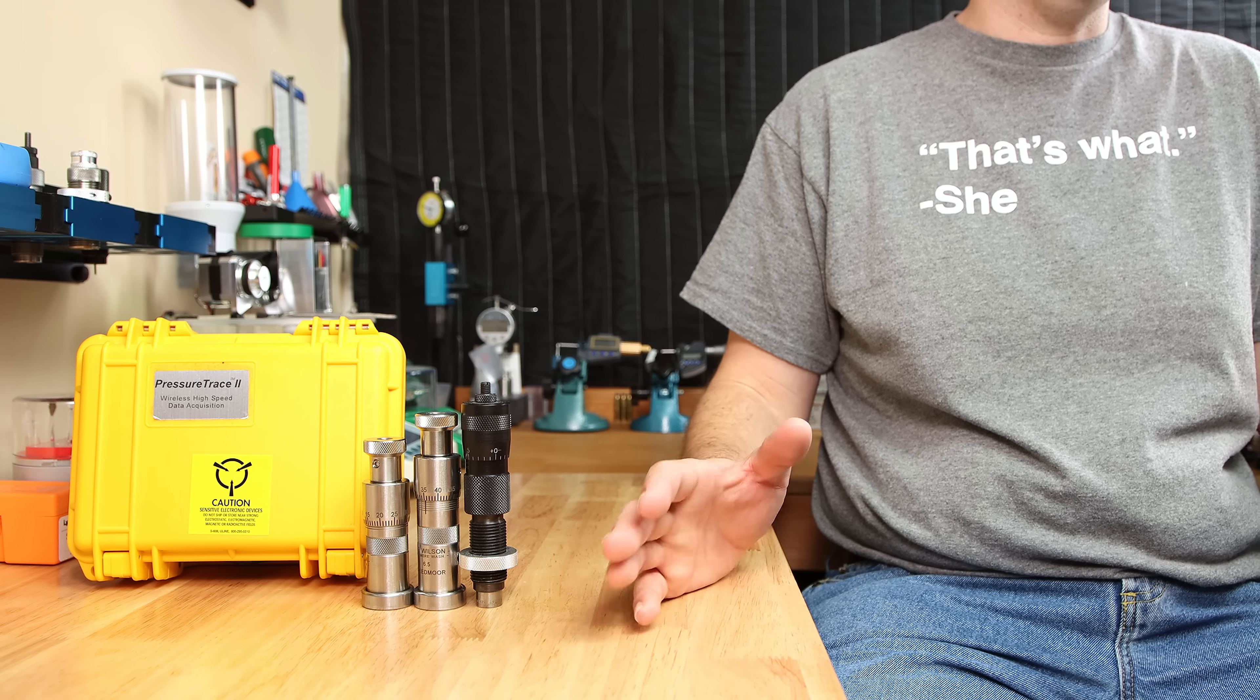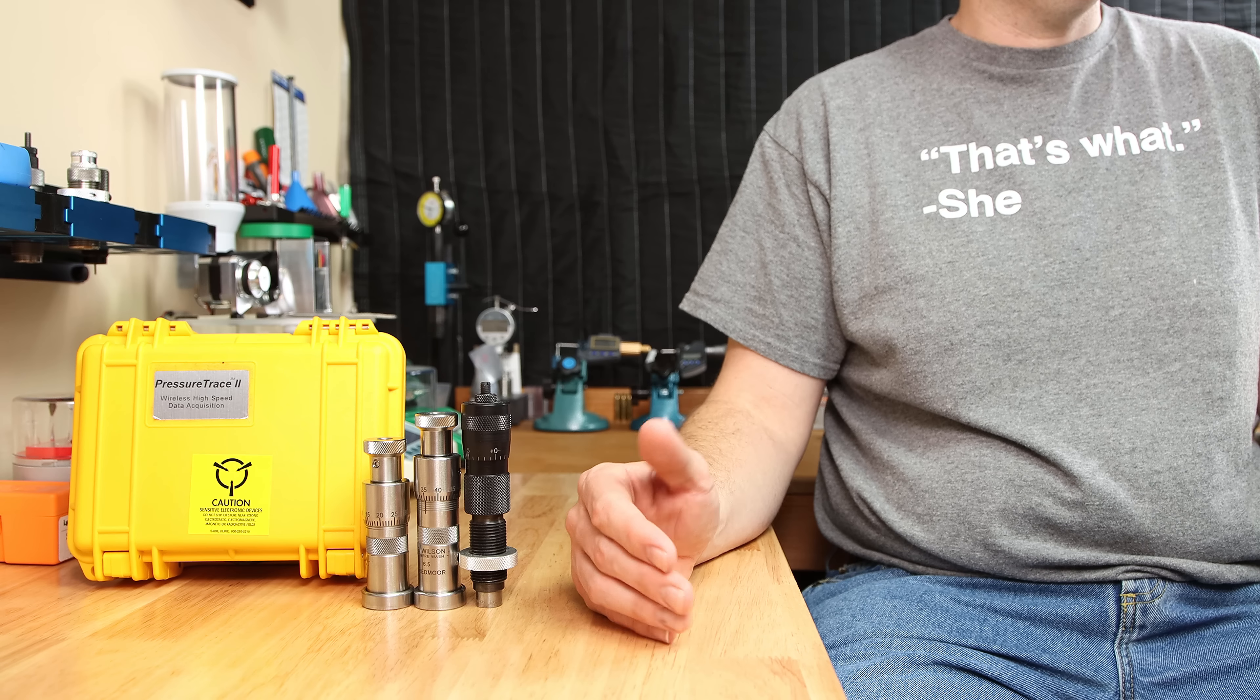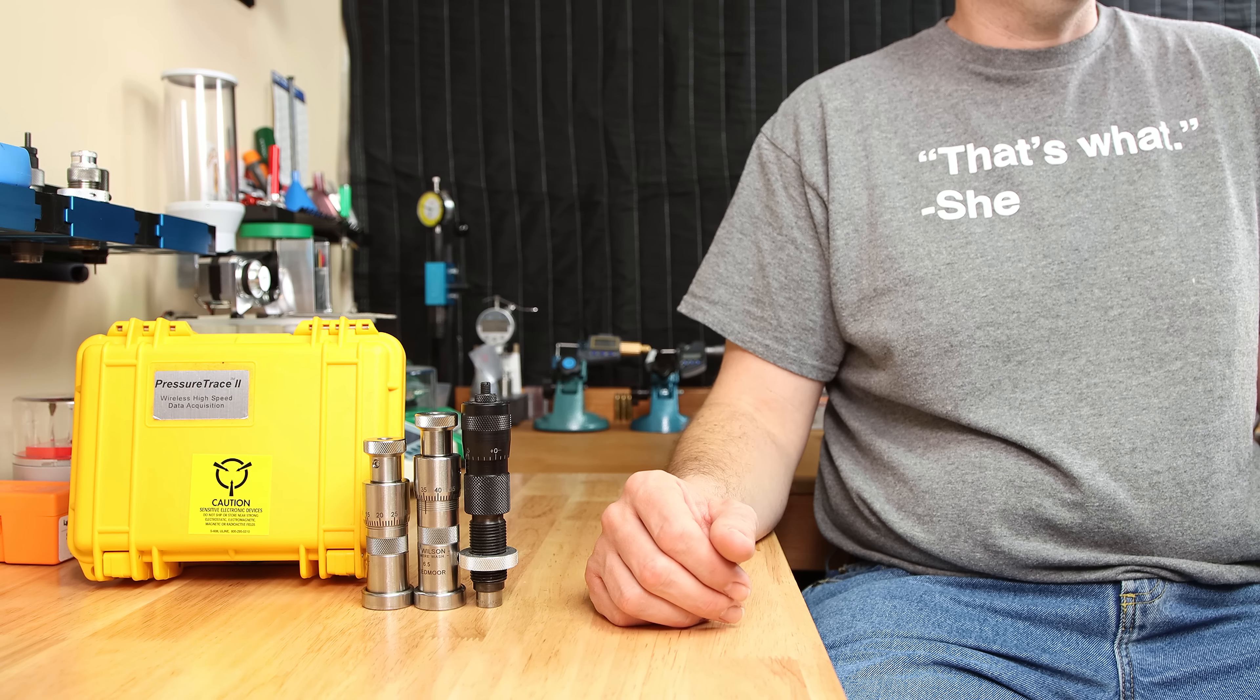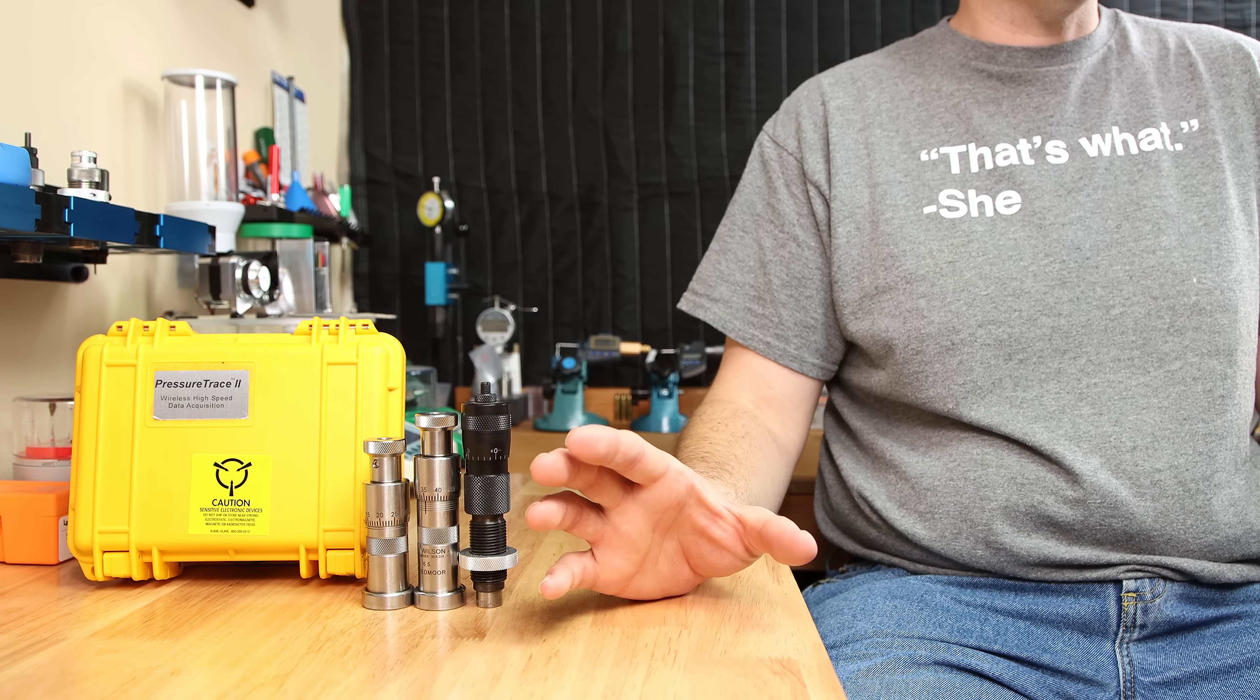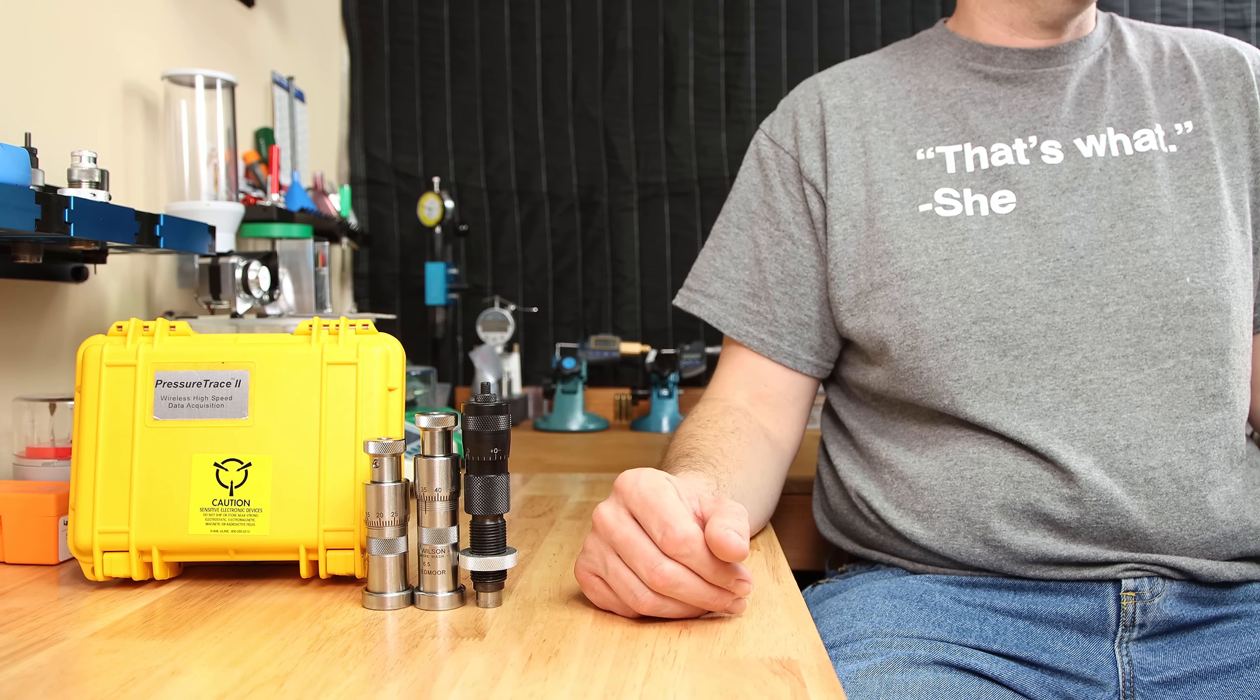The point where the projectile touches the lands is 2.882 inches, so we're really not going very far into the lands today, at least in 6.5 Creedmoor. So, only 51 thousandths of total overall length tested, but this is what we got.